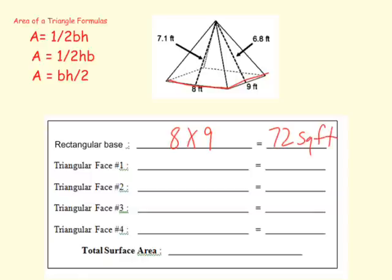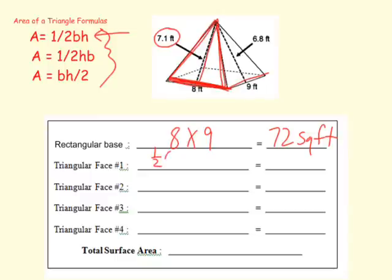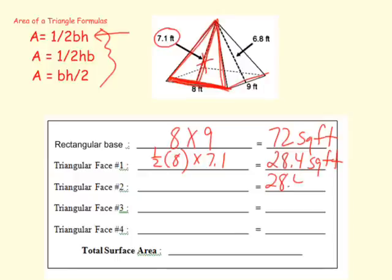Let's find the area of one of the triangular faces. I'm going to start with this face. The base is 8 and the slant height is 7.1. I'll use one half of the base times the height. One half of 8 is 4, and 4 times 7.1 is 28.4. So the area of this lateral face is 28.4 square feet. The lateral face opposite that is going to be exactly the same: 28.4 square feet.